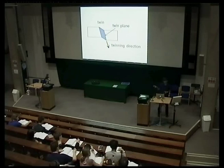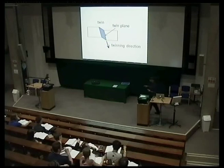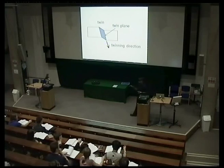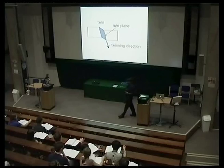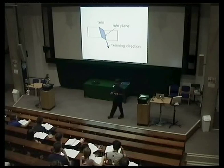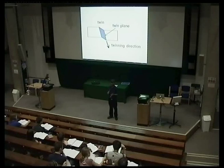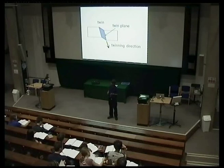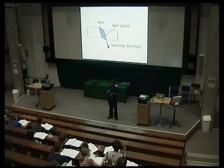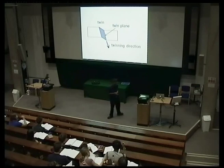This kind of deformation, like slip deformation, doesn't require any diffusion, so it can happen at very low temperatures. You're simply moving all the atoms in a very disciplined way, in the same direction, at the same time, to create the twin region.